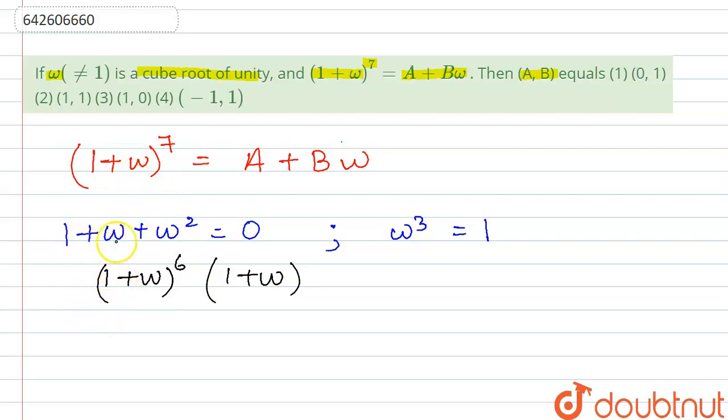Over here 1 plus omega from this part we get as minus omega square whole power 6 times 1 plus omega.